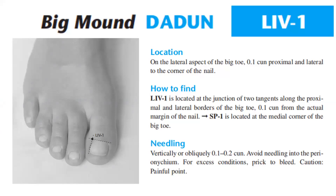Location: Liver 1 is on the lateral aspect of the big toe, 0.1 cun proximal and lateral to the corner of the nail. To find Liver 1, it is located at the junction of two tangents along the proximal and lateral borders of the big toe, 0.1 cun from the actual margin of the nail.